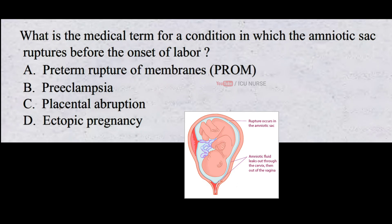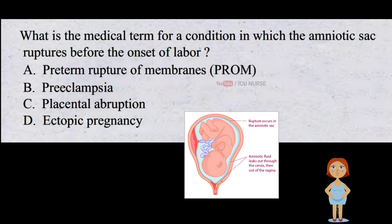What is the medical term for a condition in which the amniotic sac ruptures before the onset of labour? A. Preterm rupture of membranes. B. Preeclampsia. C. Placental abruption. D. Ectopic pregnancy. And the correct answer is A.